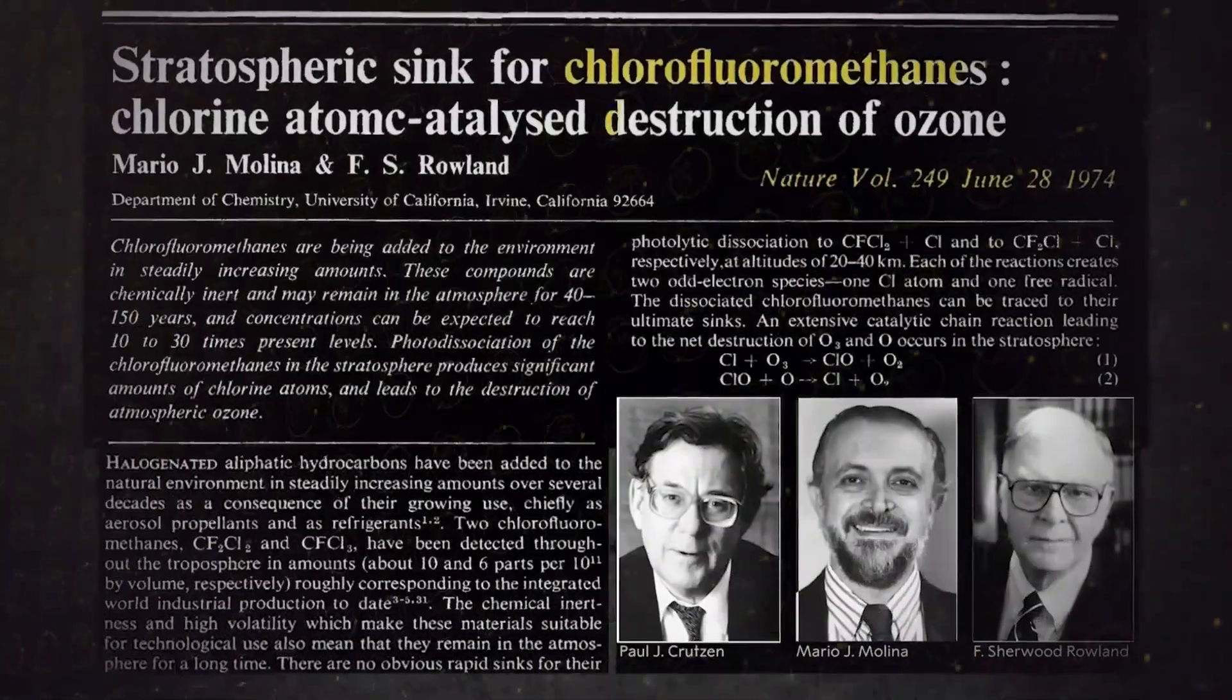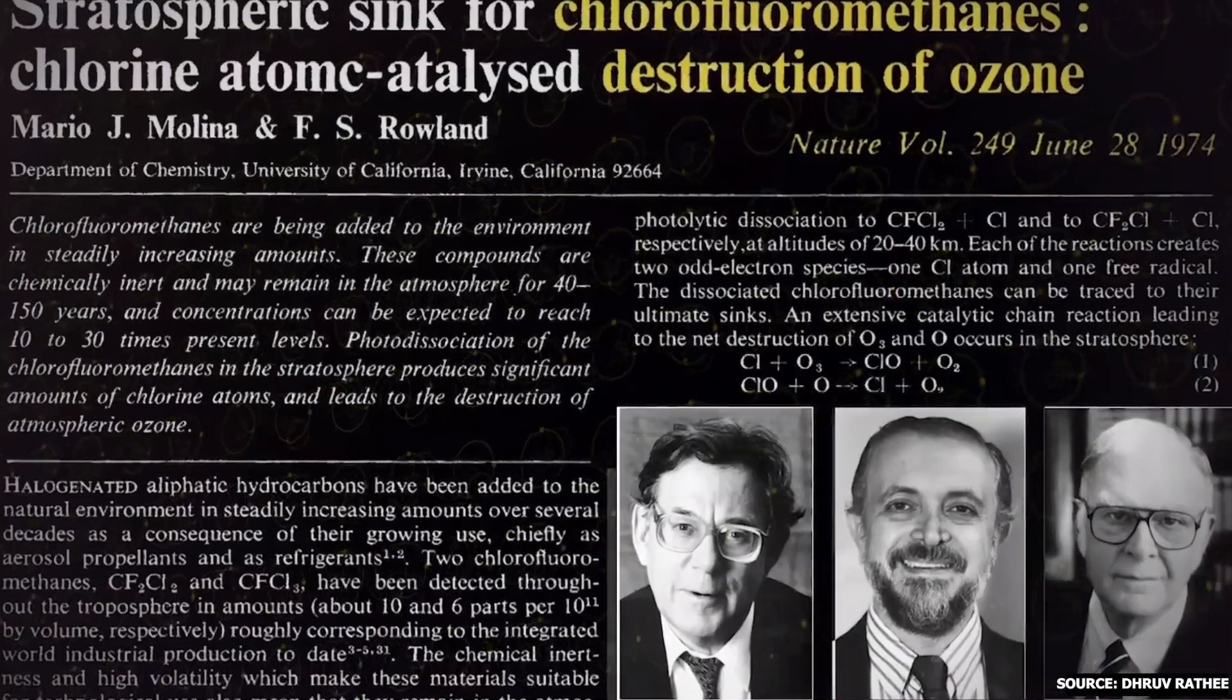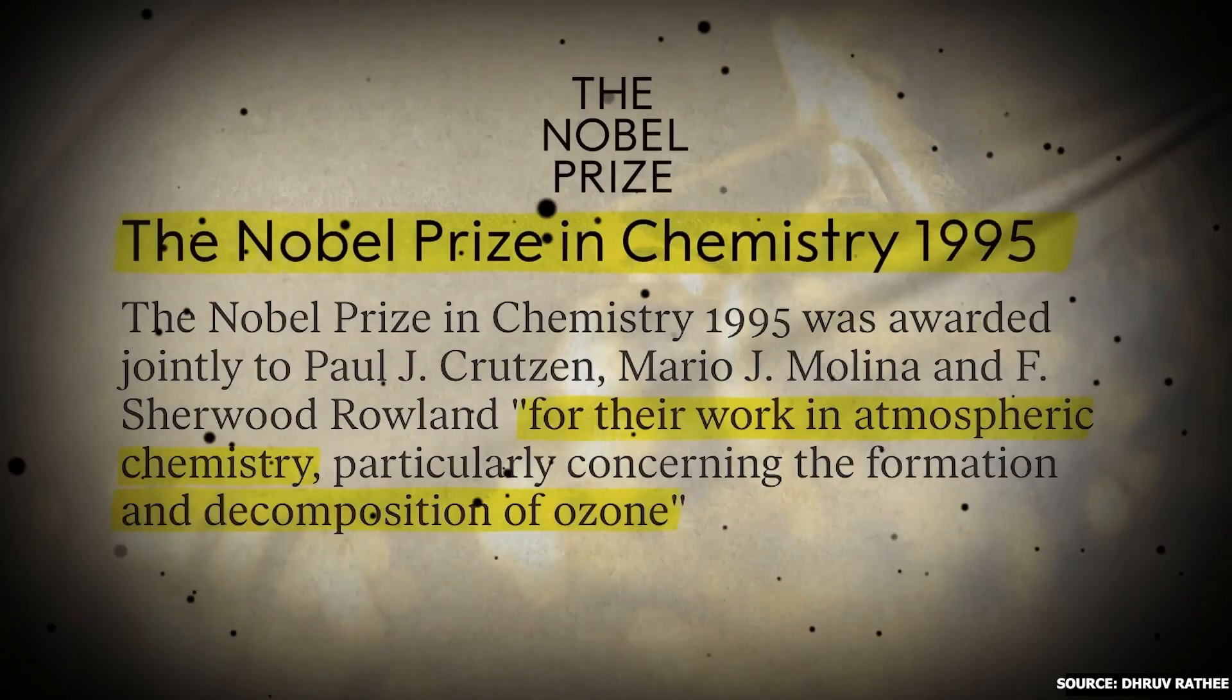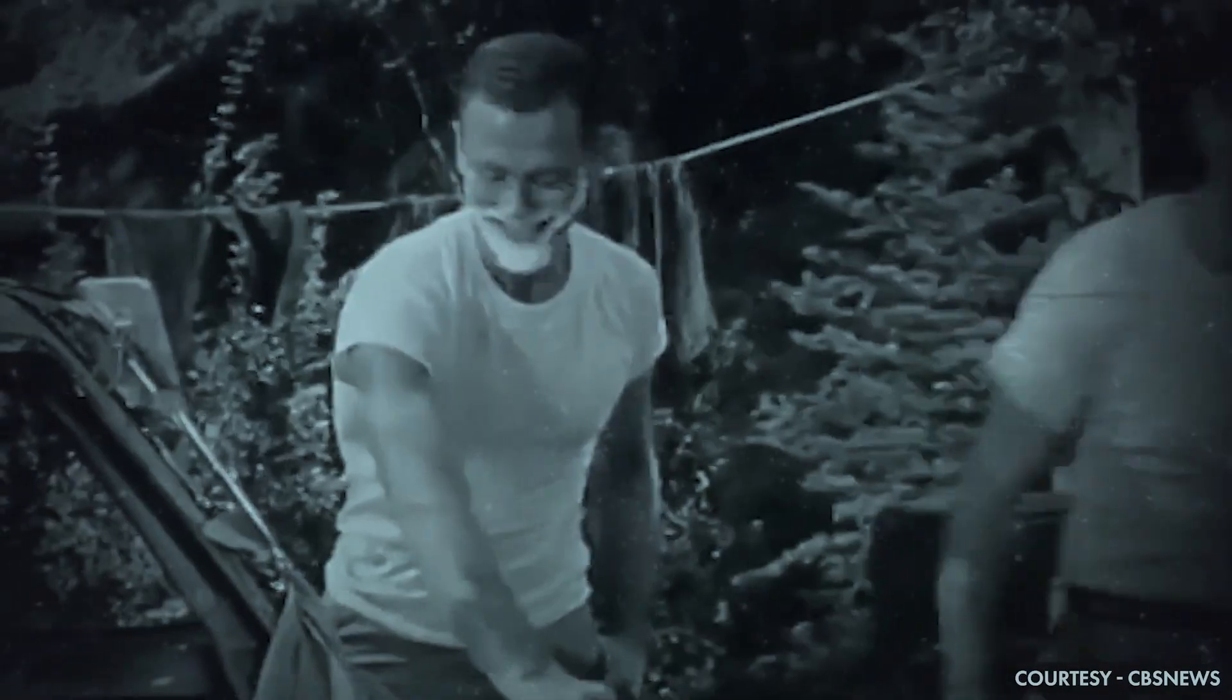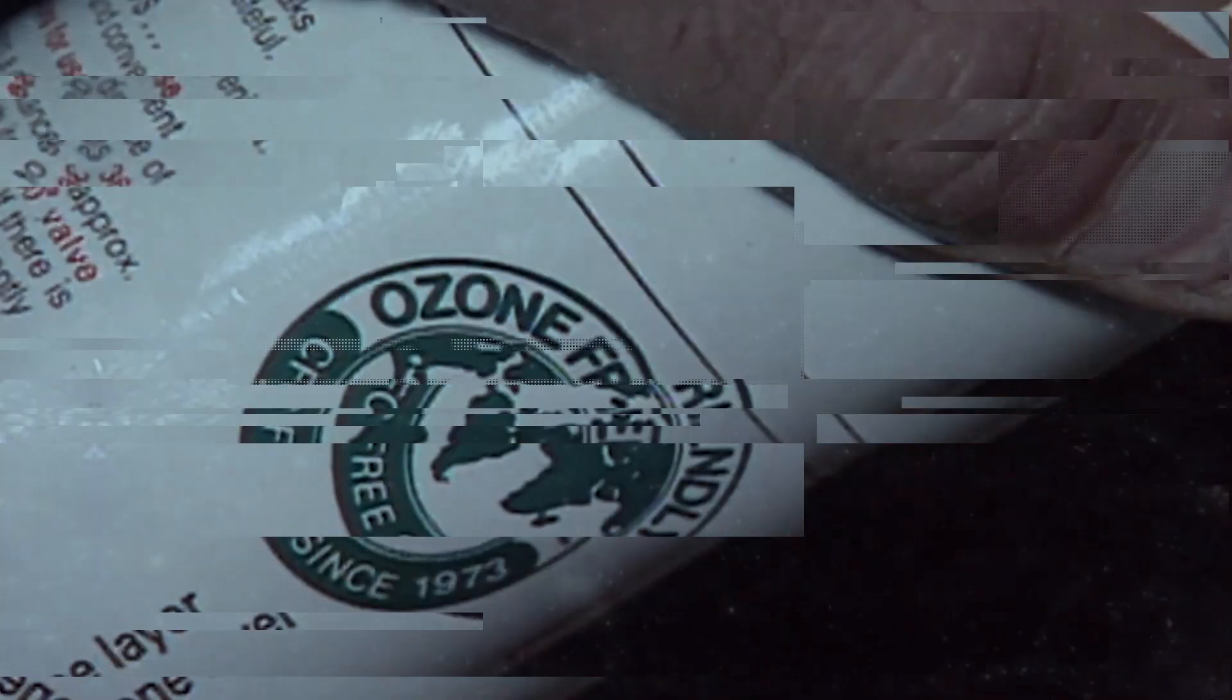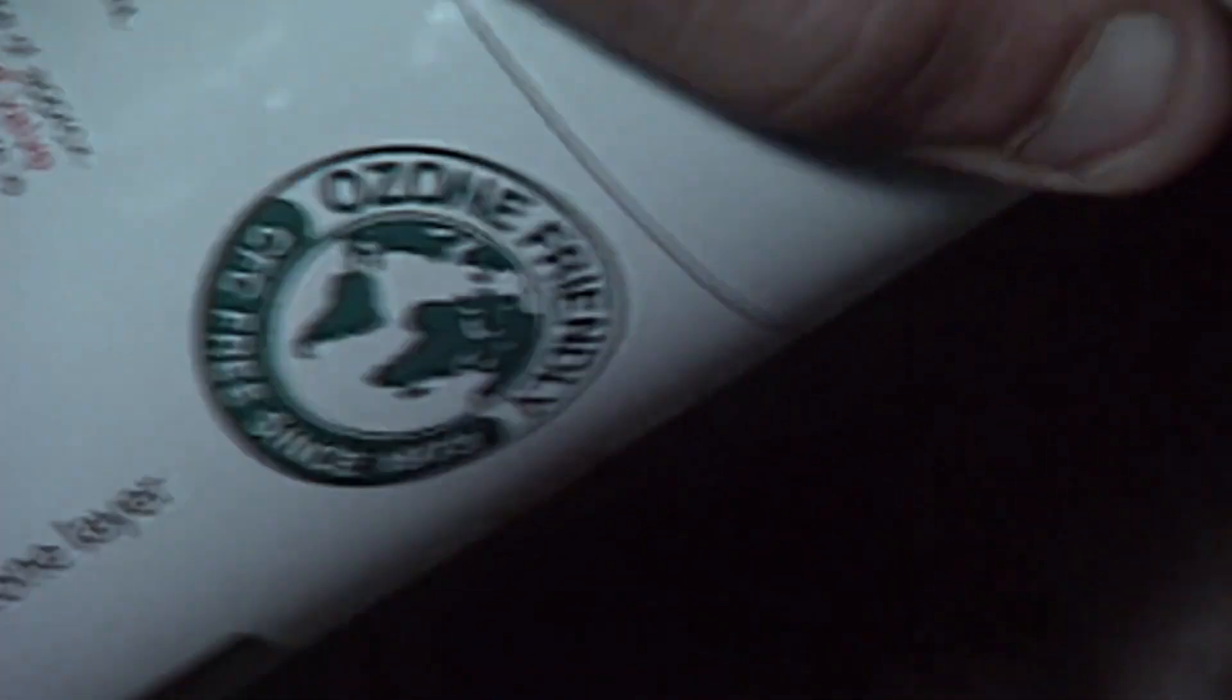In 1974, three scientists released a paper that later earned them a Nobel Prize. They pointed out a significant problem: a chemical called CFCs, commonly used in many products, was damaging our ozone layer. At that time, CFCs were popular because they were stable and versatile, found in everyday items.